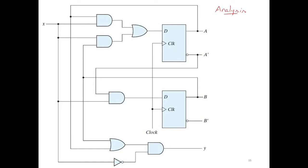In this video lecture, let us discuss the analysis of sequential circuits which use D flip-flops. In the analysis process, the input is a circuit diagram that has memory components, making it a sequential circuit analysis. The output of the analysis process is the function of the circuit — the relation between input x and outputs y, a, and b.